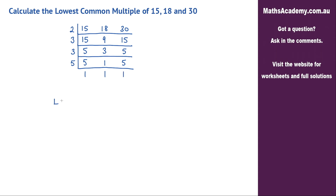So the lowest common multiple — the way we find that — is the product of these numbers here. We've got 2 multiplied by 3, multiplied by 3, multiplied by 5. That gives 90. So the lowest common multiple of 15, 18, and 30 is 90.